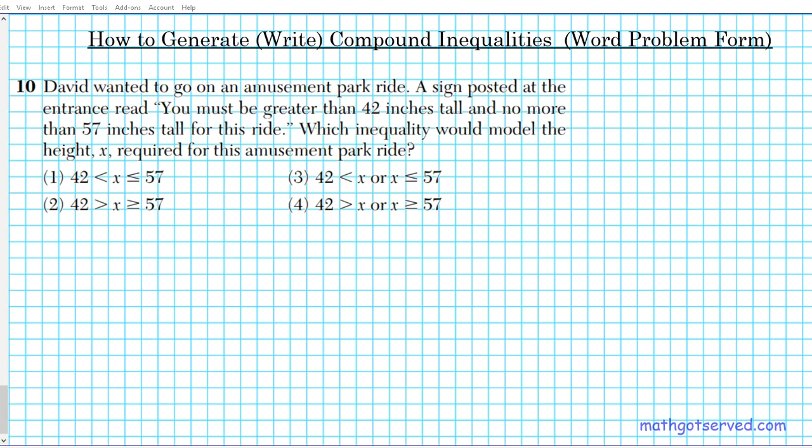Question 10 reads: David wanted to go to an amusement park. A sign posted at the entrance read, you must be greater than 42 inches tall and no more than 57 inches for this ride. Which inequality would model the height x required for this amusement park ride?